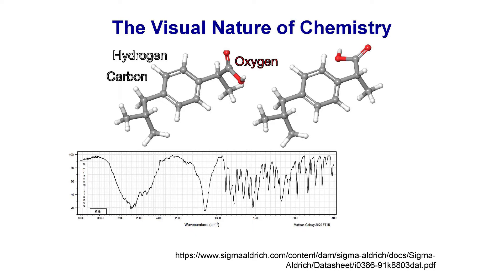To go beyond static structural representations, chemists also visualize molecular vibrations through their interaction with infrared light, as shown by this spectrum, where each dip corresponds to absorption by a particular vibration or molecular motion. For example, the dip above 1600 wavenumbers corresponds to stretching of the C double bond O, shown at right.